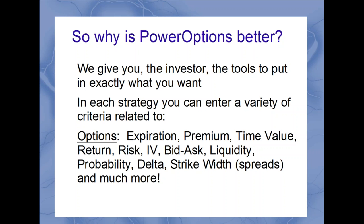Why is PowerOptions better? Because we give you exact tools and exact criteria to specify what you want across all 23-plus strategies. You can enter a variety of criteria for the options, such as the expiration timeframe — standard or weeklies, or a specific timeframe like 8 to 20 days out — as well as premium, net credit, time value, percentage return on risk, implied volatility ranges, bid-ask spreads, liquidity, probability, delta, Greeks, strike width for spreads, and much more.